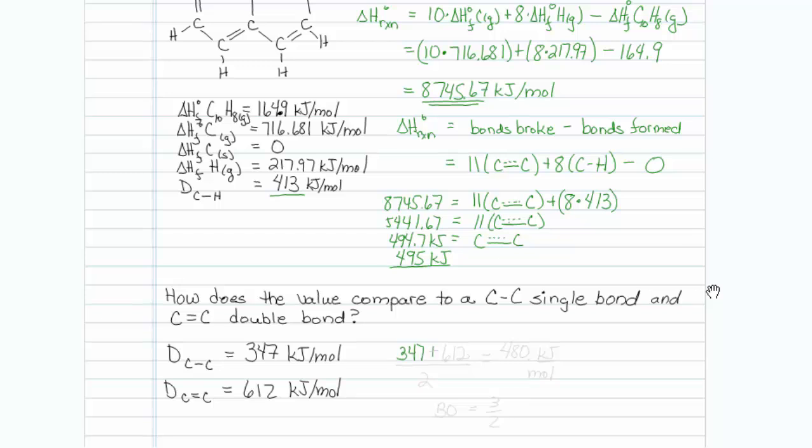I could take 347 plus 612 and divide it by 2, and that would give me a value of 480 kilojoules per mole. So this would be if the bond order was exactly equal to 3 halves. But it's not. It looks like it's a little bit of a stronger bond because we get stabilization from resonance structures. So our value came out for naphthalene to be 495 kilojoules.